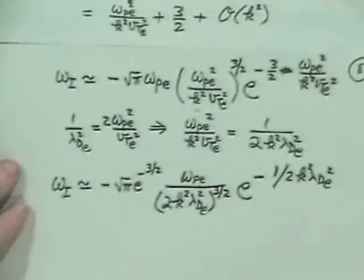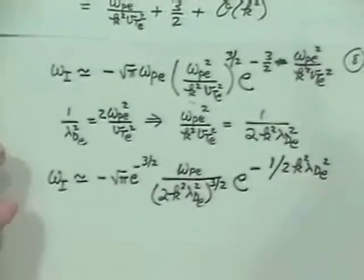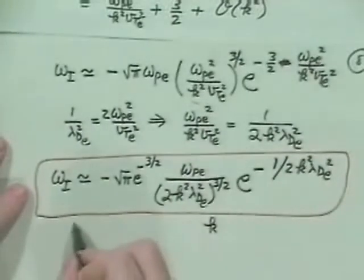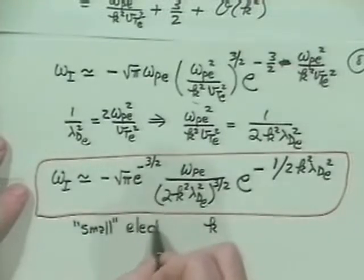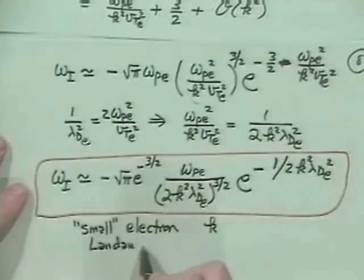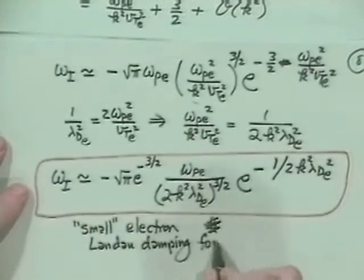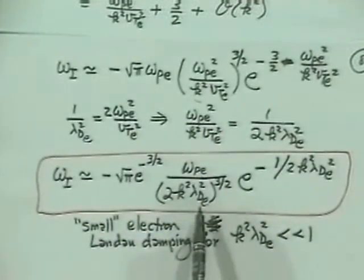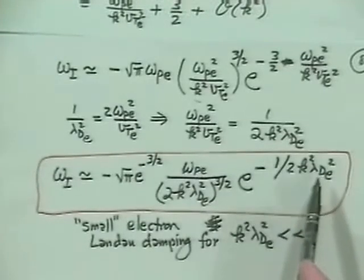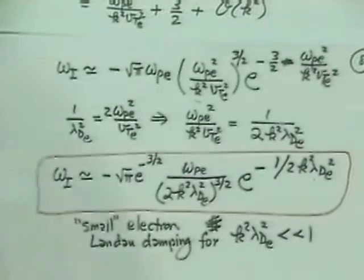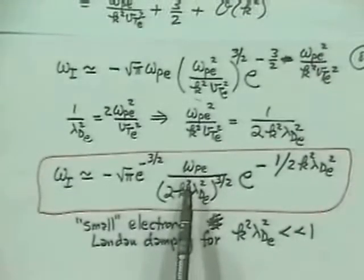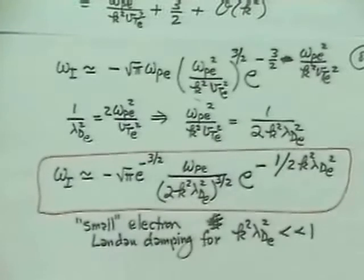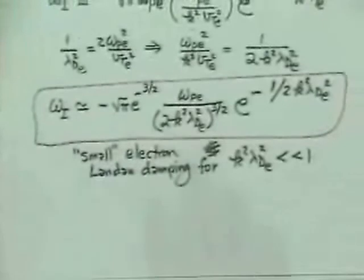This is the small electron Landau damping, valid for k squared lambda_Debye_e squared much less than 1. The prefactor 1 over that small quantity to the 3/2 power is large, but the exponential e to the minus 1 over that small number is extremely small. So on the plasma frequency timescale the damping is very weak — perhaps two or three orders of magnitude smaller than the oscillation frequency. This is why we are always interested in long-wavelength modes compared to the electron Debye length.